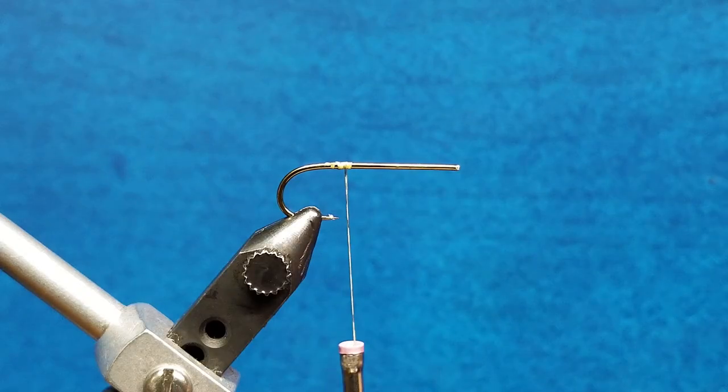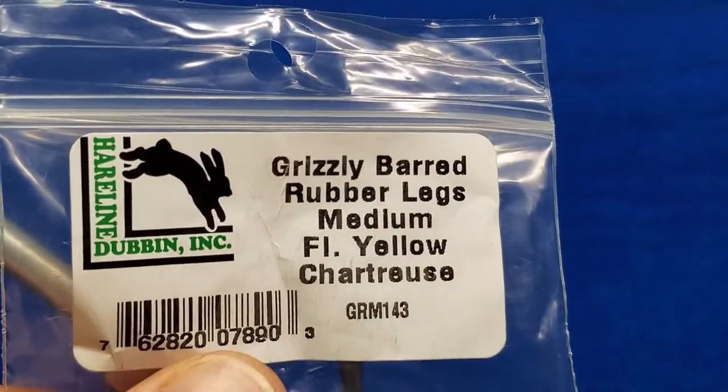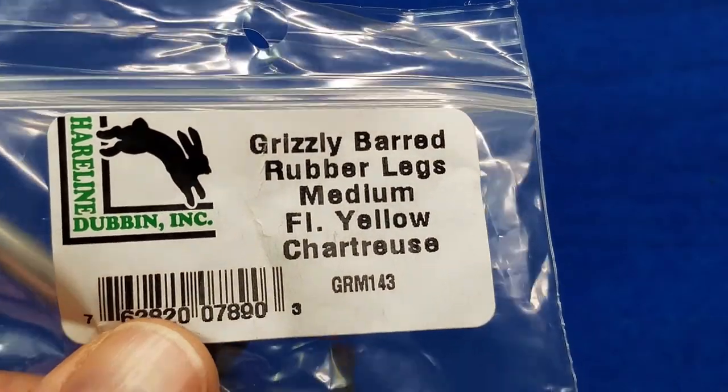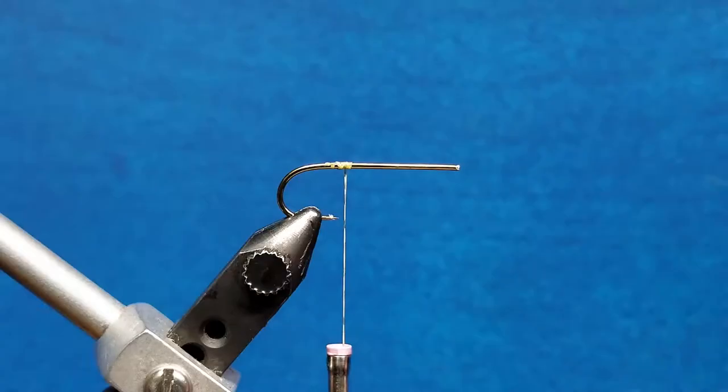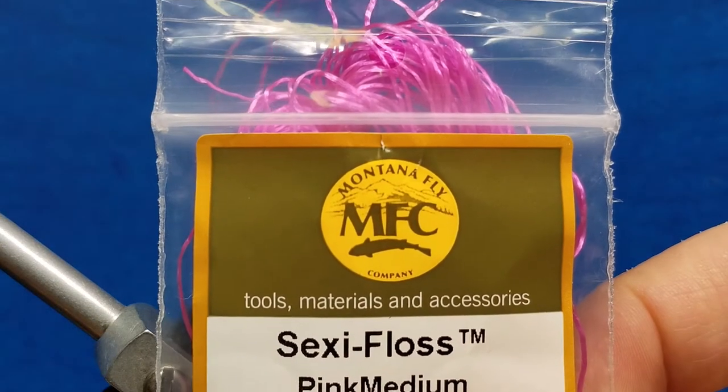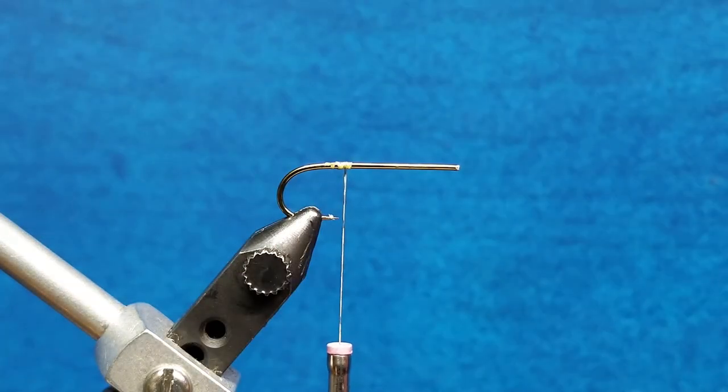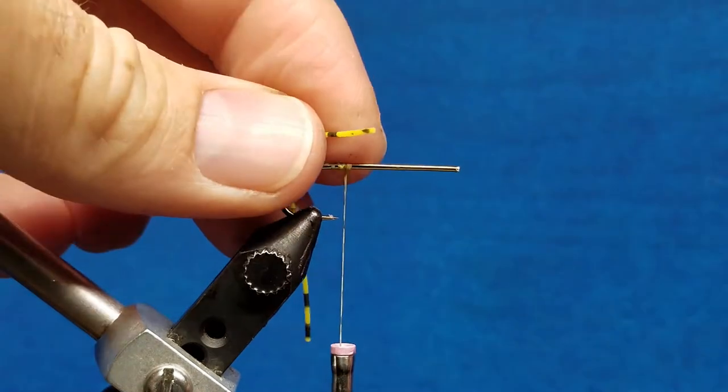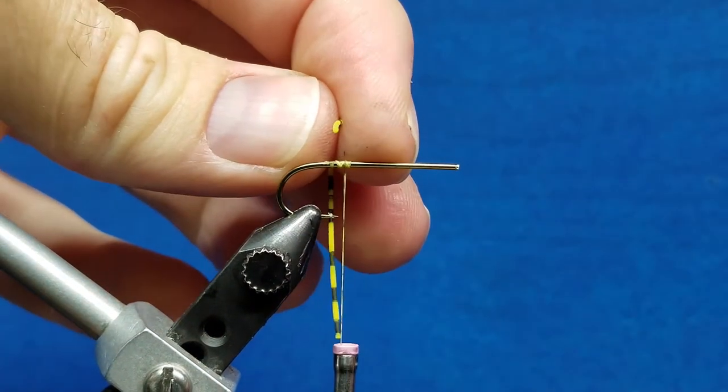When it comes to rubber legs for patterns, I use two major categories: there's the perfectly round rubber that comes in solid and barred colors, and then there's the spandex floss material. A big difference when we look at the two—it's pretty straightforward, mostly in the name. So the round rubber is, as it says, nice and round.